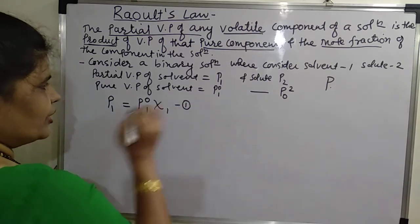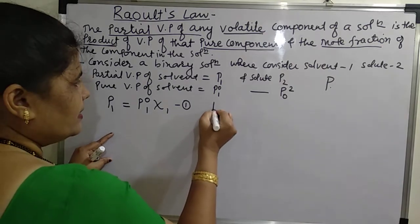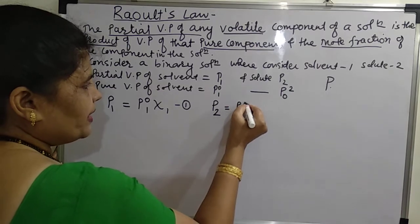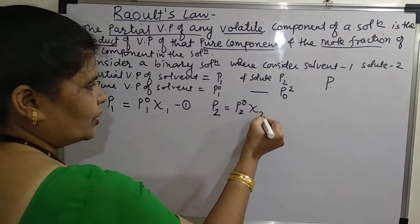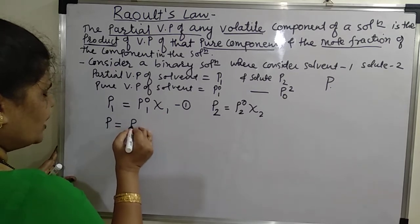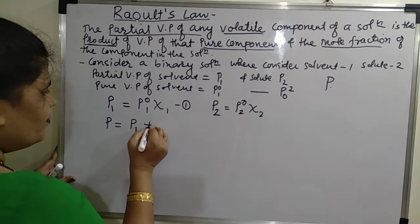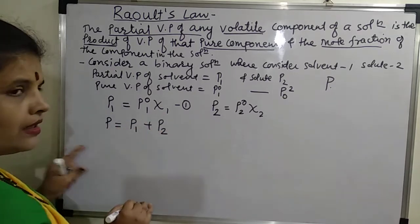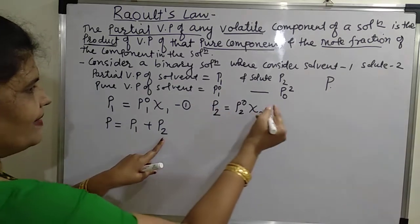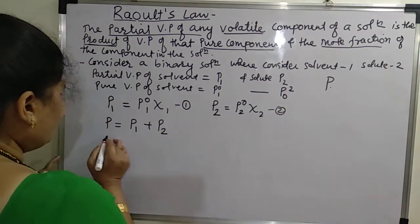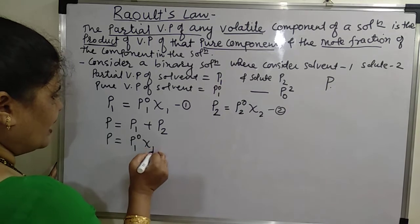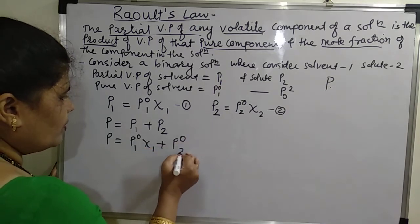Similarly, the partial vapor pressure of the solute, P2, is equal to P02 multiplied by the mole fraction of component two, X2. This is equation number two. The total vapor pressure P is equal to the partial vapor pressure of the solvent plus the partial vapor pressure of the solute, so P equals P01·X1 plus P02·X2.